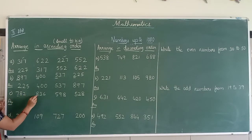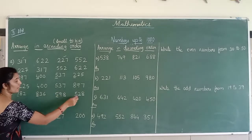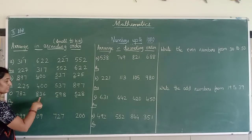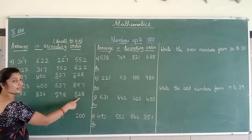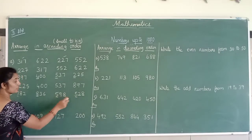Next, you have 782, 836, 598, and 528. So in this, you have 5, 2 digit.